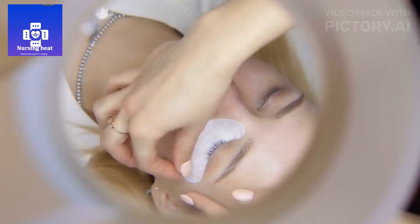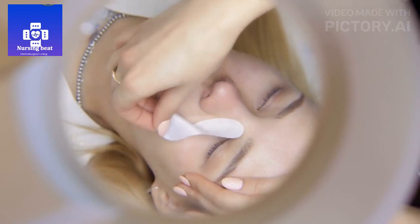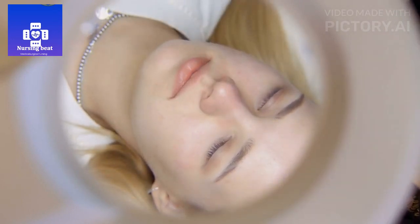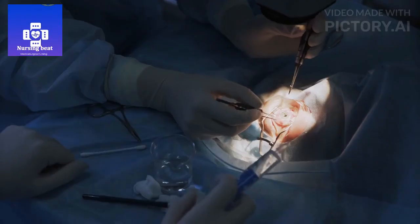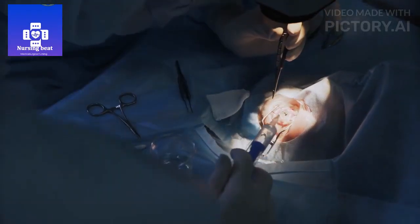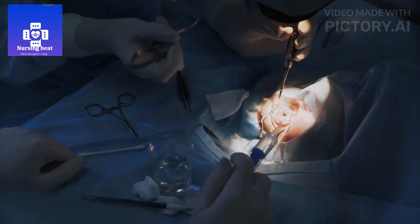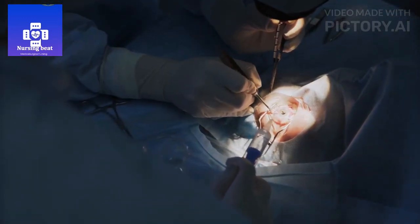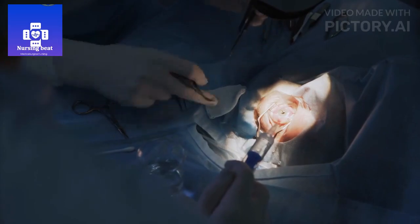3. Anti-VEGF injections. These injections help reduce the growth of abnormal blood vessels and control swelling in the retina. 4. Vitrectomy. If there's significant bleeding or retinal detachment, a surgical procedure called vitrectomy might be necessary to remove blood and repair the retina.